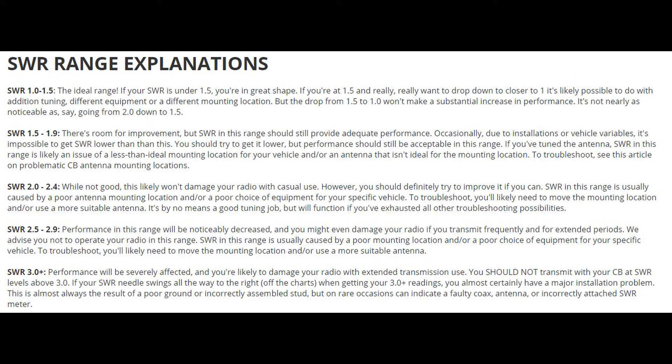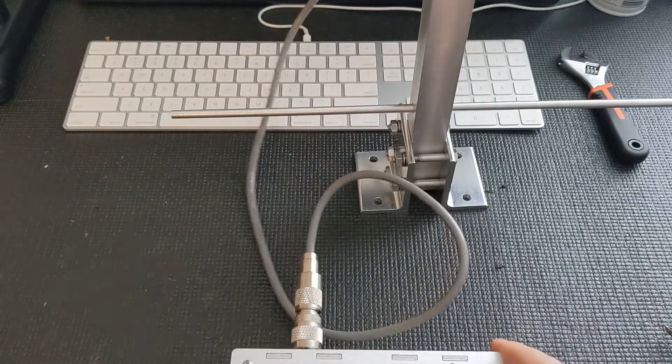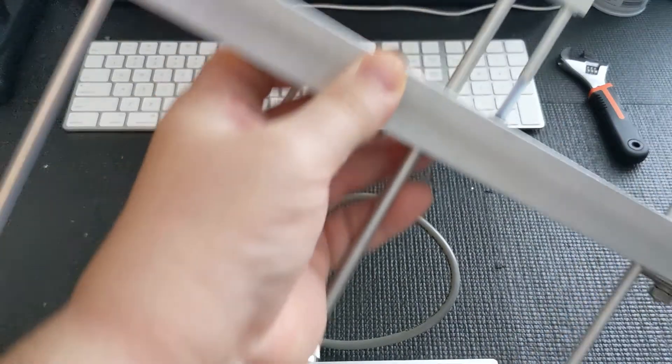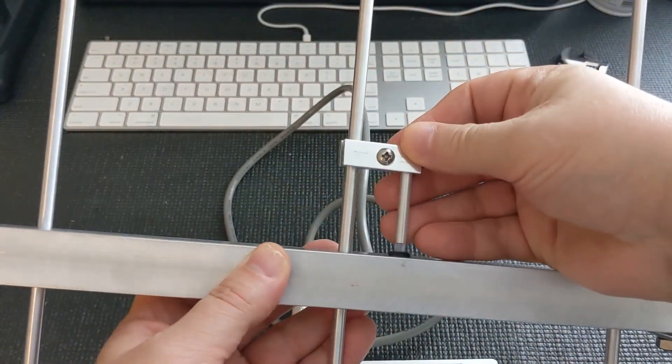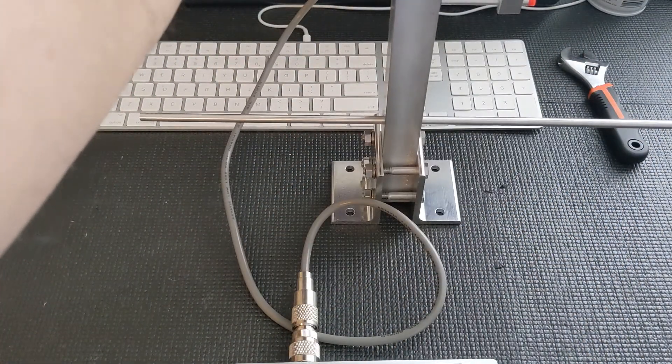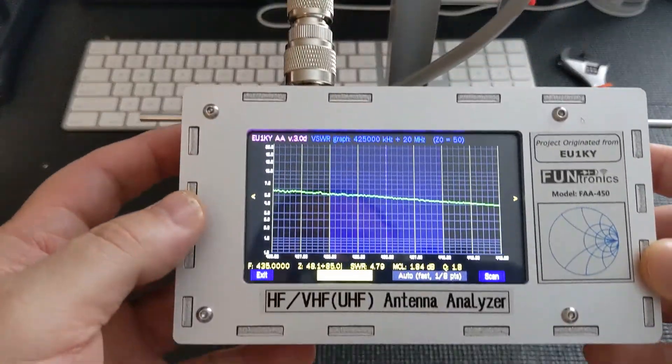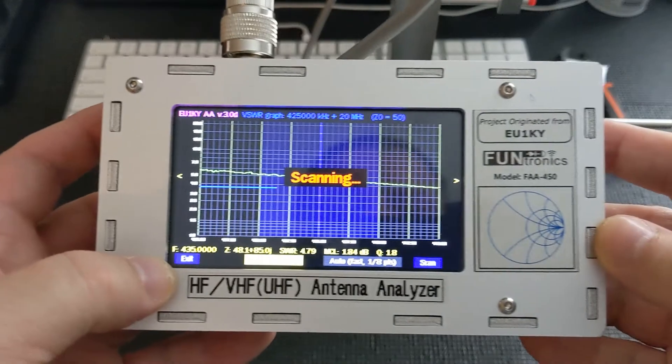Now we are going to go to the antenna and adjust the gamma match with the little adjustment here—just push it down—and then we're basically going to rerun the scan after we did that to see what effect it has on the SWR. Here we are scanning again.